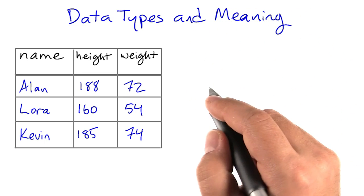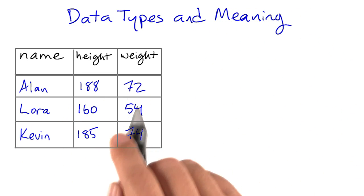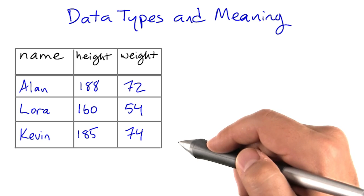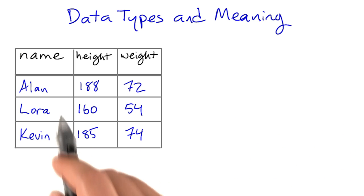Here's another table. This one has some people's heights and weights in it. Each row of this table contains the same sort of data about a different person.